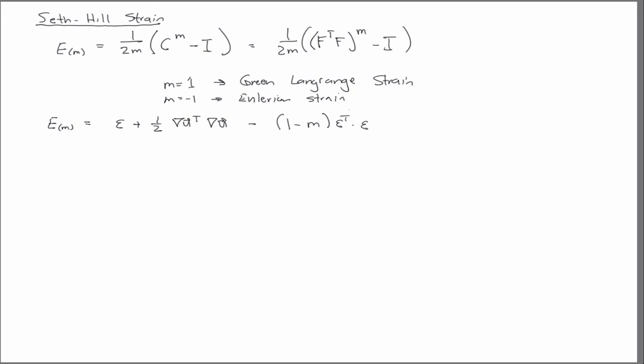And a second-order approximation of this guy is this. Okay. Where this little e is the linear strain or the small strain, right? So it's that thing. And the reason I write this is to show, again, all of these infinite number of Seth Hill strain measures all reduce in the linear limit, right? So if you ignore, see, these are going to introduce nonlinear terms. This is going to introduce nonlinear terms. So when you linearize that thing, all of them reduce to the small strain, okay?